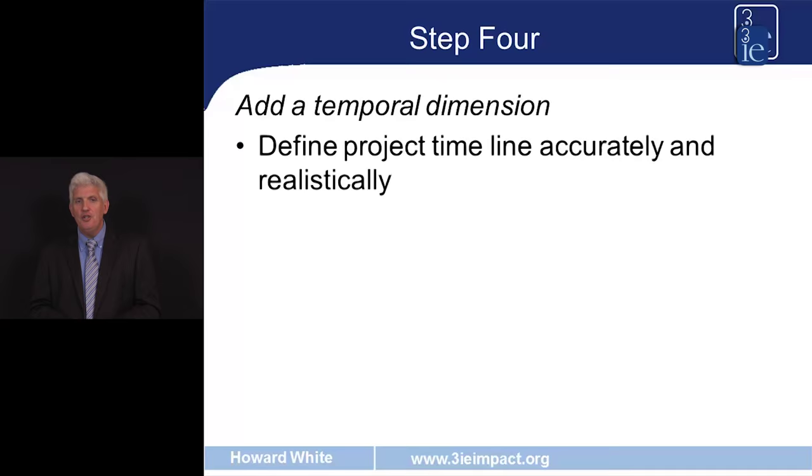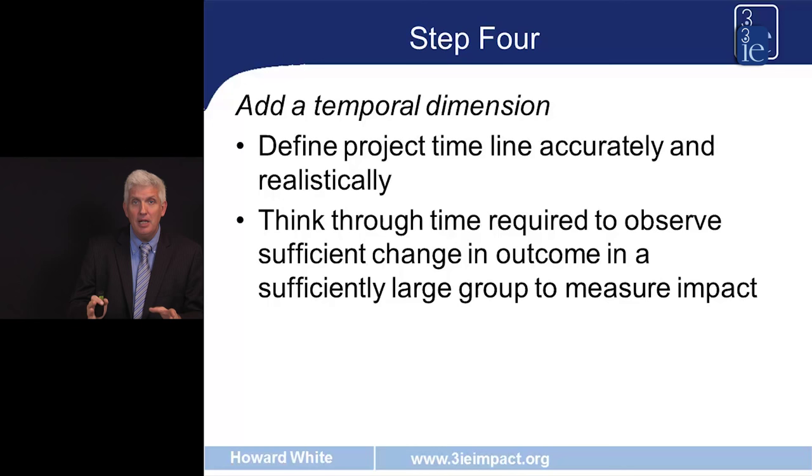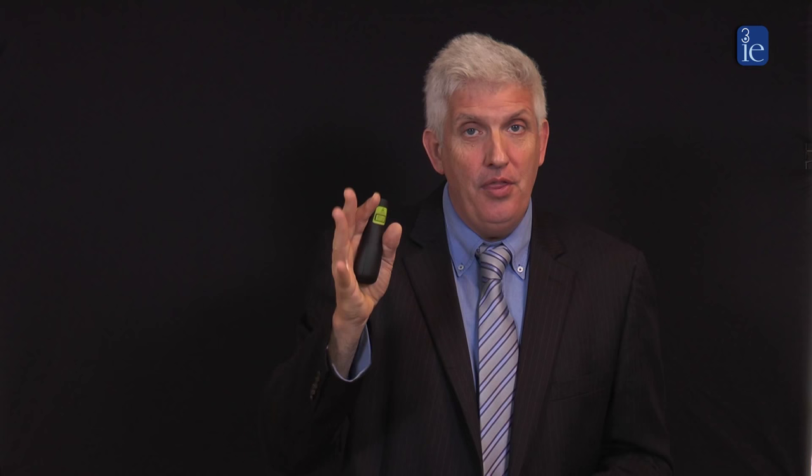Moving on to step four, the temporal dimension. Define the project timeline accurately and realistically, and think through the time required to observe a change of sufficient magnitude in sufficient people to make it sensible to measure impact. For the school feeding example: higher attendance you can probably measure after one year. Attentiveness also. Higher learning outcomes might take two or three years. But the thing we really want to achieve — better educated people with higher productivity and higher lifetime earnings — would require waiting a lifetime to measure. We should be aware that's part of our theory of change, and we're using the proxy final outcome of higher learning outcomes instead.